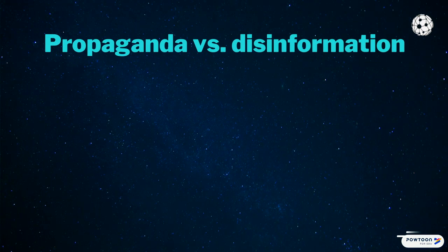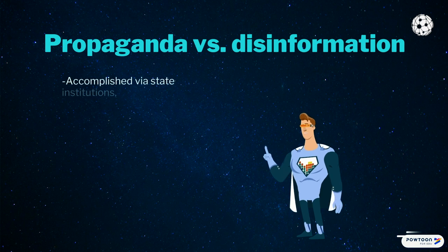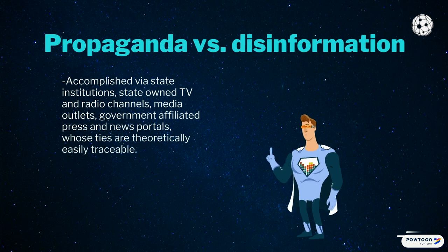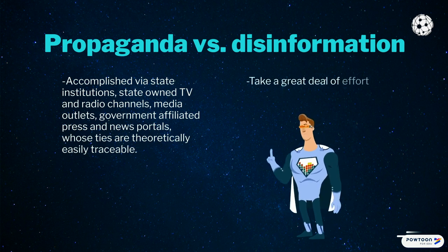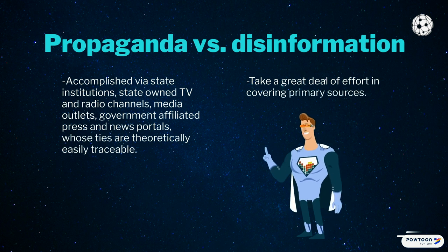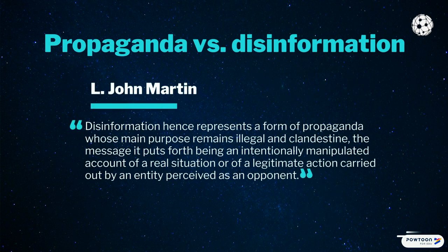Propaganda vs. Disinformation. Experts separate conventional propaganda from disinformation by making reference to the source. If propaganda is accomplished via state institutions, state-owned TV and radio channels, media outlets, government-affiliated press and news portals whose ties are theoretically easily traceable, disinformation operations take a great deal of effort in covering primary sources, while information operations remain, at least partially, clandestine. According to L. John Martin, disinformation represents a form of propaganda whose main purpose remains illegal and clandestine.